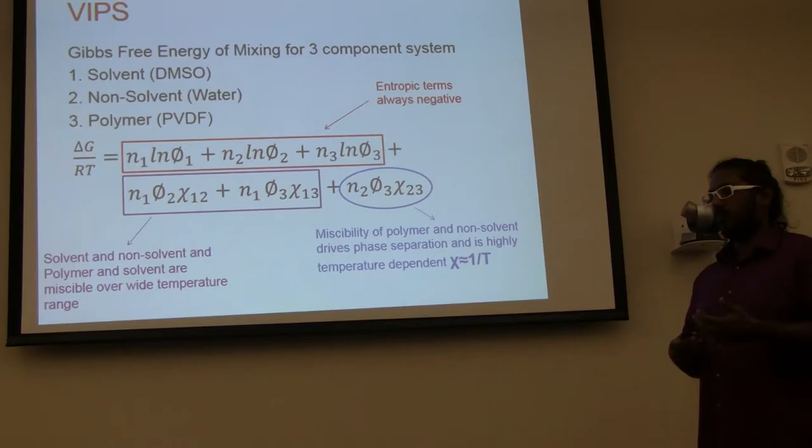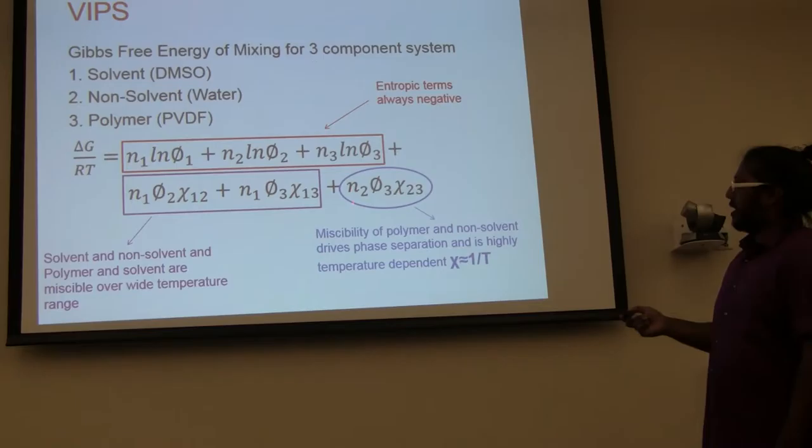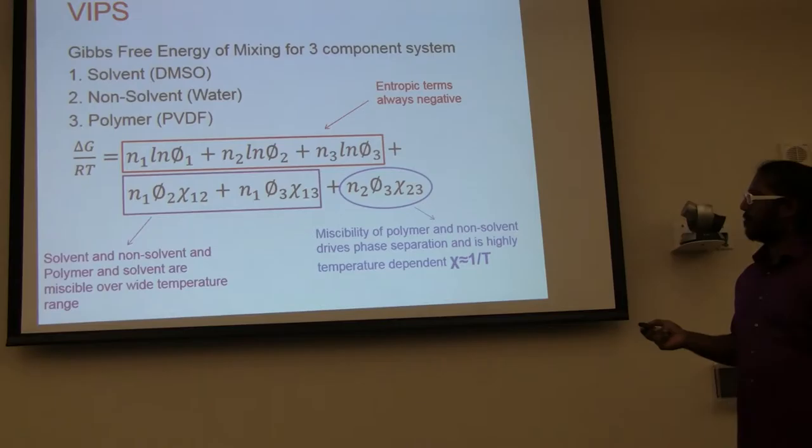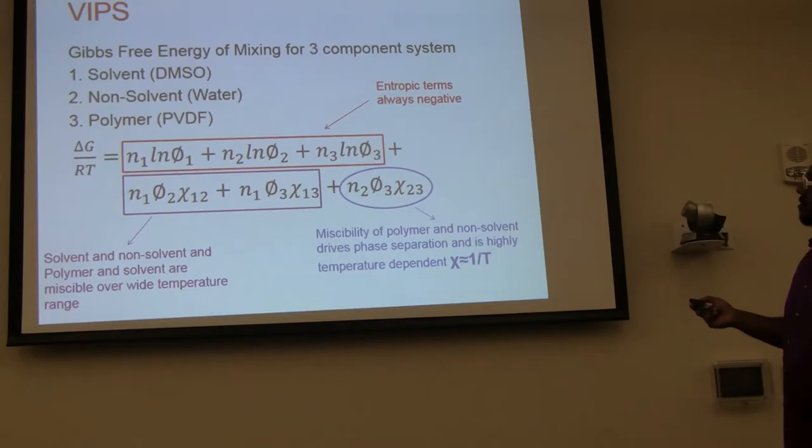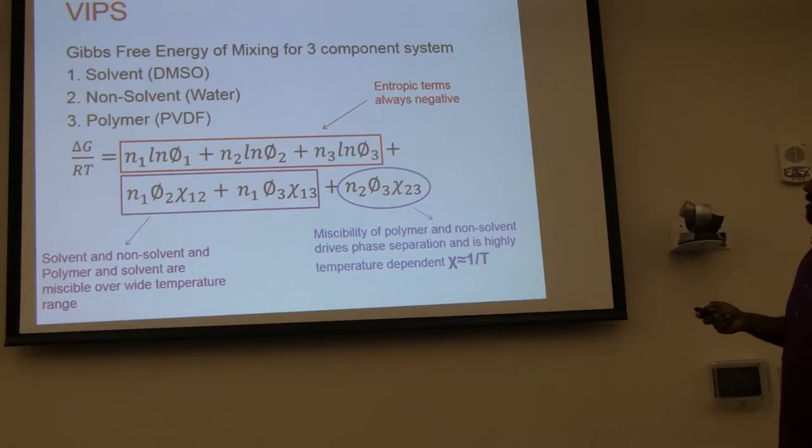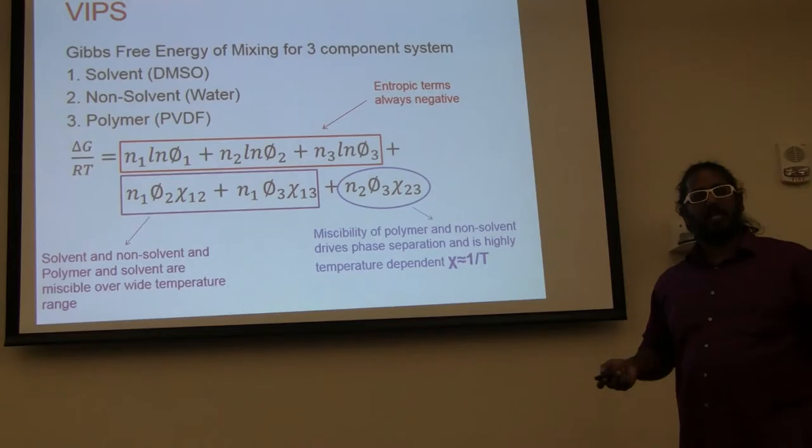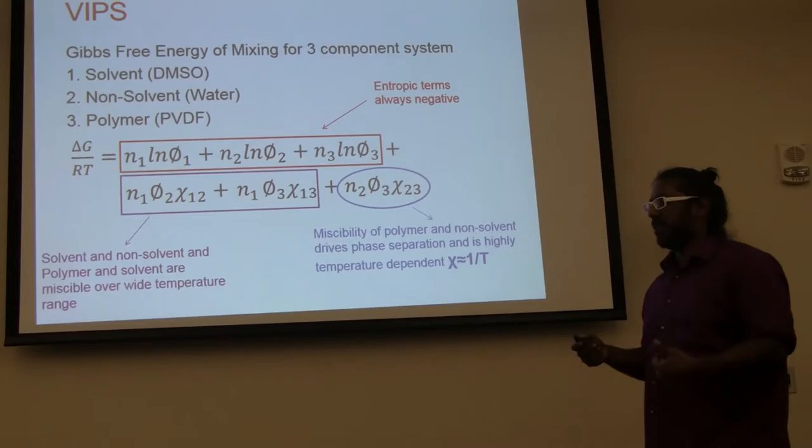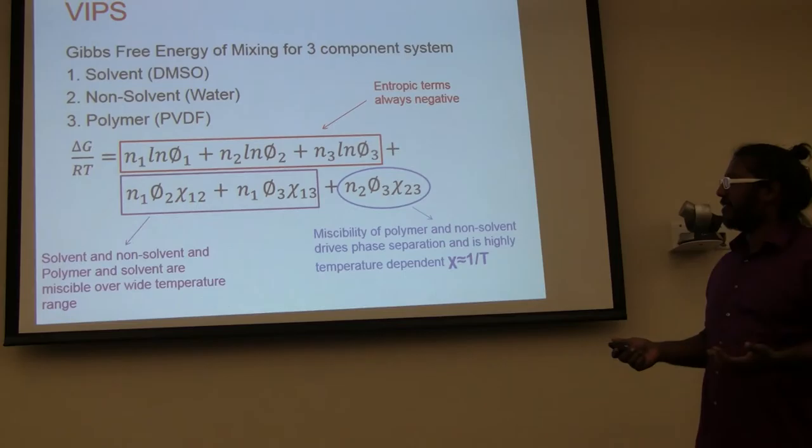But in our particular case, they're negative because we've shown that the polymer and our solvent are miscible at this temperature. And the solvent and water is also miscible at all temperatures. So that leaves us with this last term that controls the phase separation, which is the polymer interaction term with the non-solvent water. The thing to know about this term is this term can be modulated by temperature. So basically, if we increase the temperature, if this term is positive, we can make it negative. This is a similar idea to keep in the back of your mind.